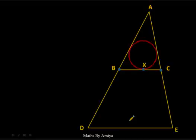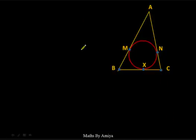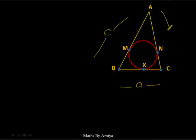Now we are going to work on the incircle concept. ABC is a triangle. There is an incircle which touches the sides at X, N, and M. Side AB is C, side BC is A, and side AC is B. If we say the tangent length from B is X, then the other tangent from B is also X, because BM and BX are tangents from point B.